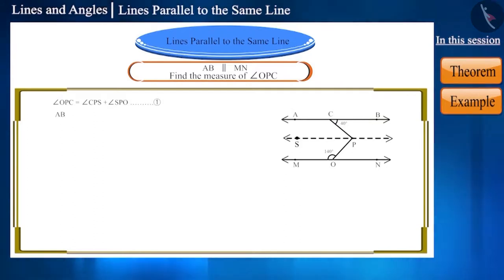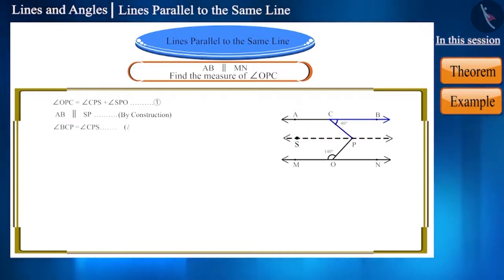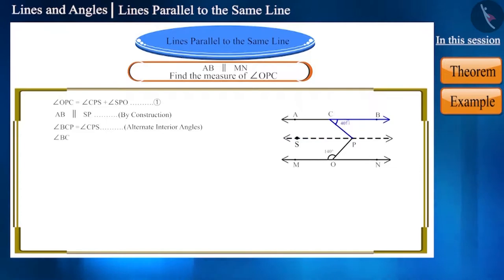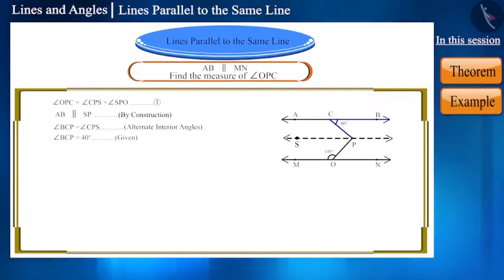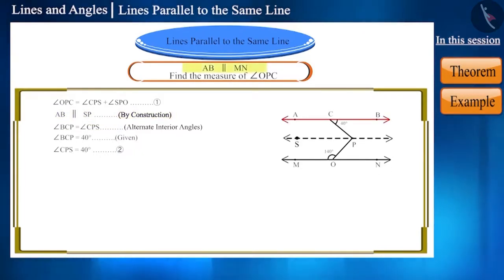Since line AB is parallel to line SP, the alternate angles BCP and CPS formed here will be equal. We are given that the measure of angle BCP is 40 degrees, so the measure of angle CPS will also be 40 degrees. Line AB is parallel to line SP, and we are also given that line AB is parallel to line MN.